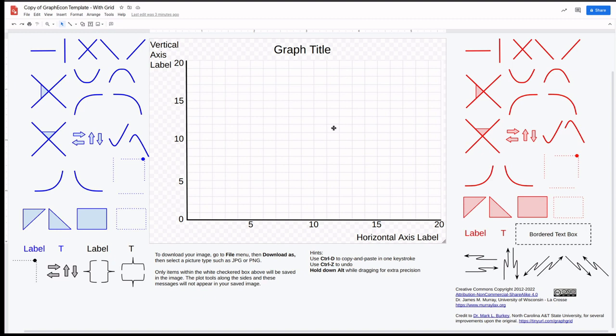I'm going to use this tool to make a Production Possibilities Frontier and identify a few points of Production Possibilities. In this checkered area, we will have our graph. Outside the checkered area will not be in your final graph, but I have a number of tools that you can copy and paste over into your graph.